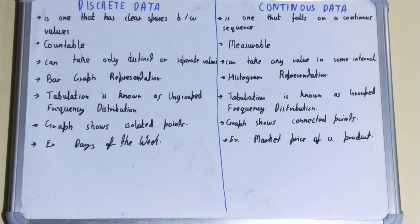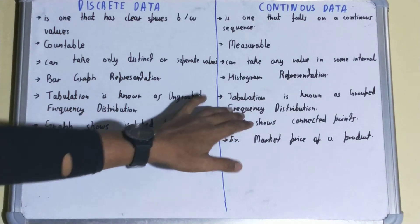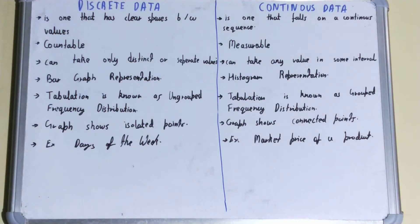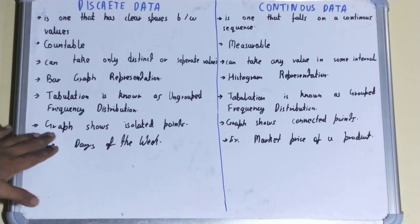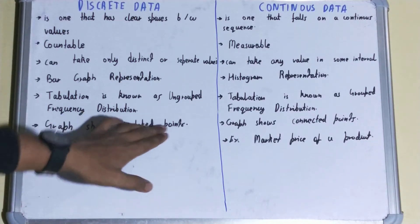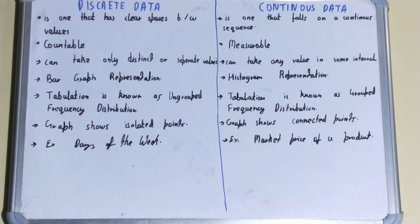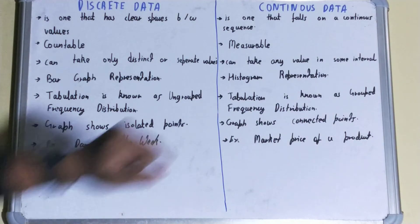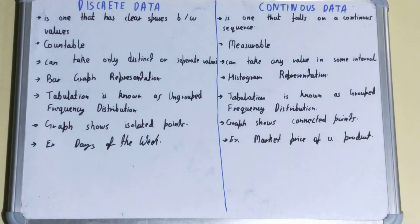For tabulation, discrete data uses ungrouped frequency distribution, while continuous data uses grouped frequency distribution. In terms of graph appearance, discrete data shows isolated or discrete points, whereas continuous data shows connected points that are interconnected with each other.